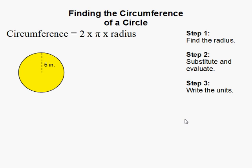How to find the circumference of a circle. Well first of all we have to know what circumference is. The circumference is the distance around the circle, or the perimeter of a circle.